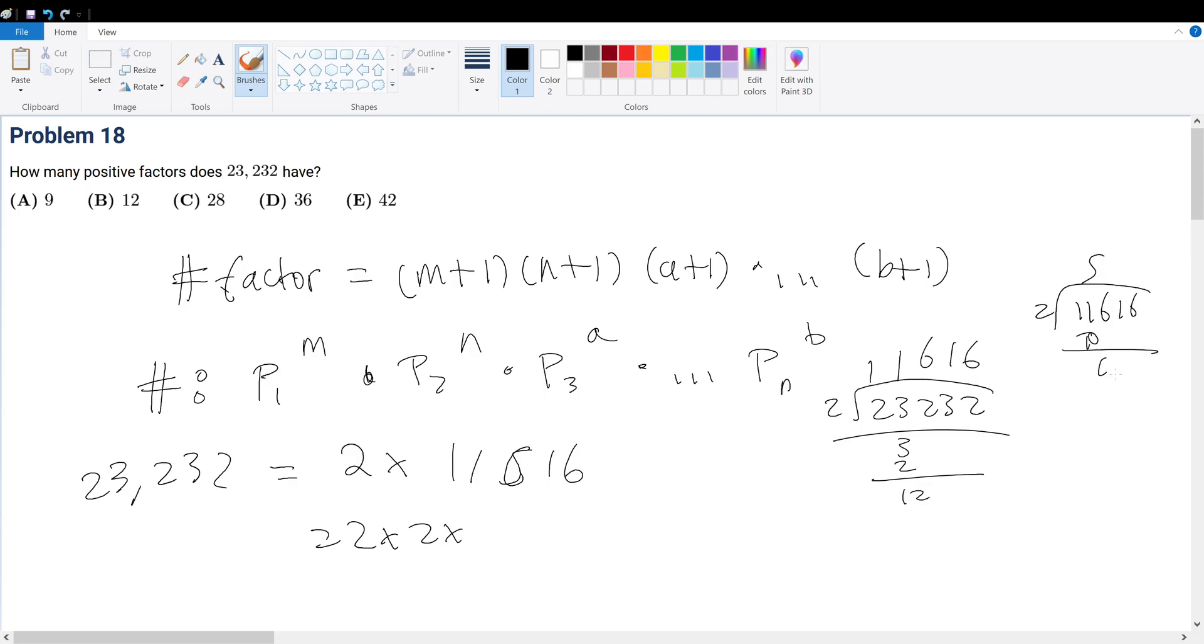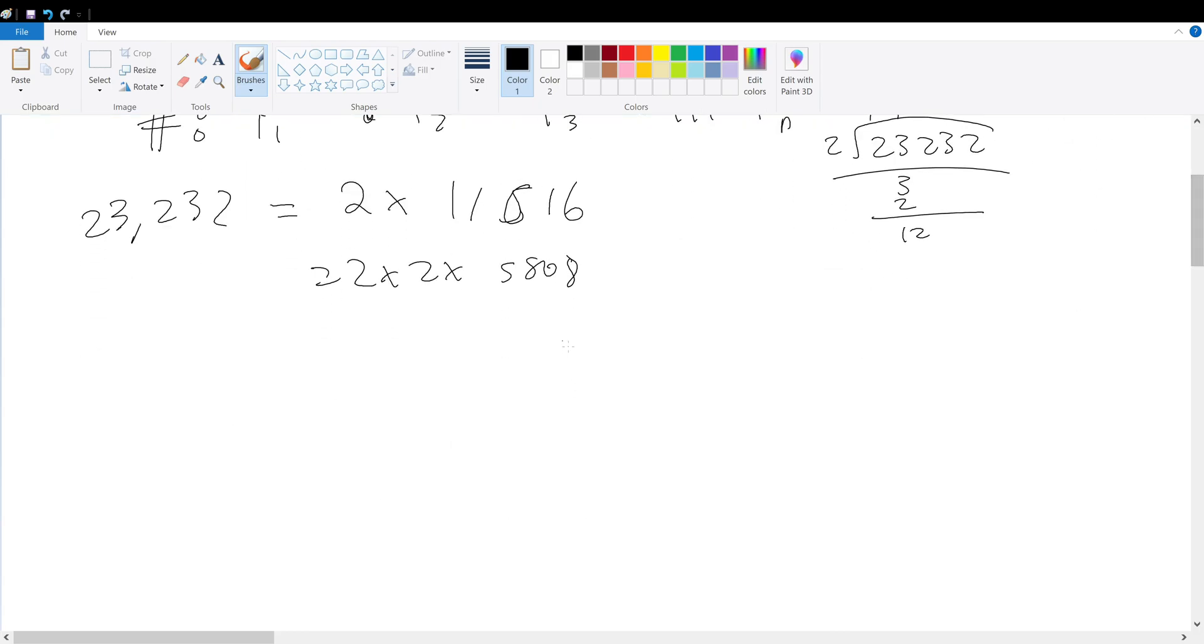5,808. Let's just scroll down. Well, 5,808 is divisible by 4 because it's the last 4 digits. So 5,808 divided by 4, 1,452. We could have put a 4 here. So 16, 20, and 52. So that's equal to 2 squared times 2 squared times 1,452.